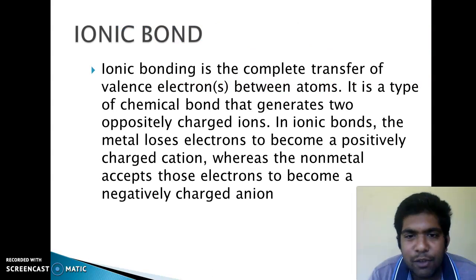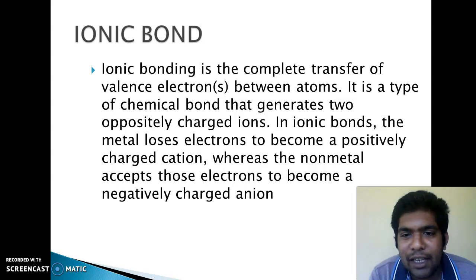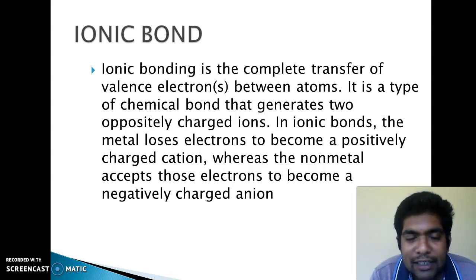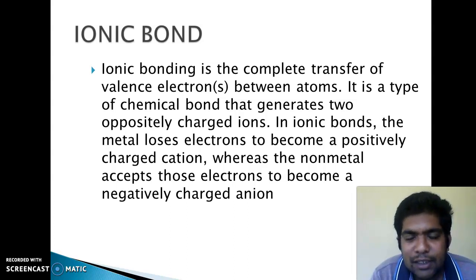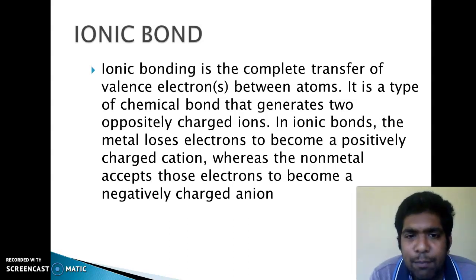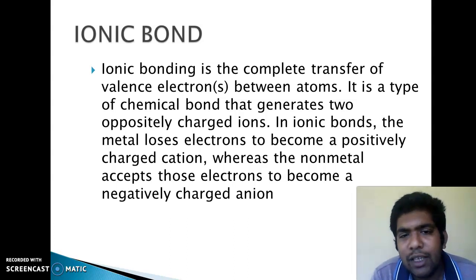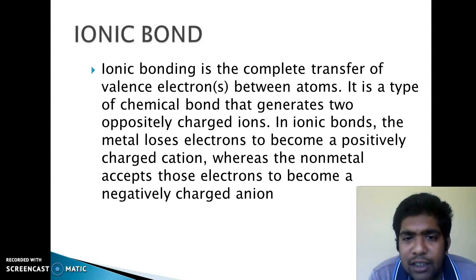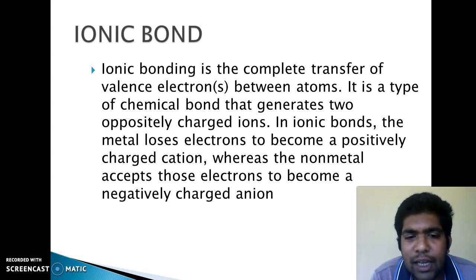Coming to ionic bond — the ionic bond is the complete transfer of valence electrons between atoms. It's a type of chemical bond that generates two oppositely charged ions. In ionic bond, the metal loses electrons to become a positively charged cation, whereas the non-metal accepts these electrons to become a negatively charged ion.